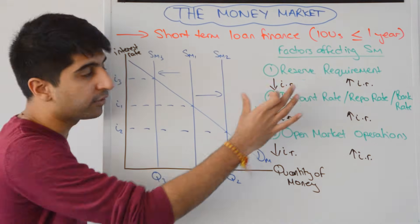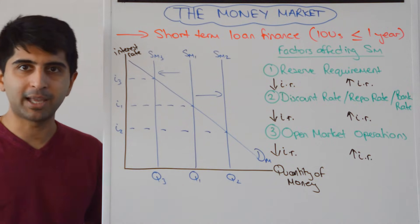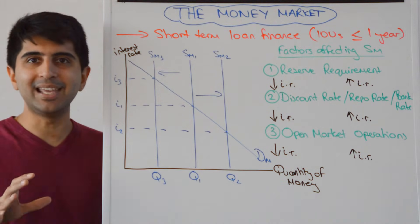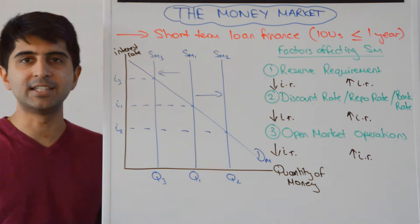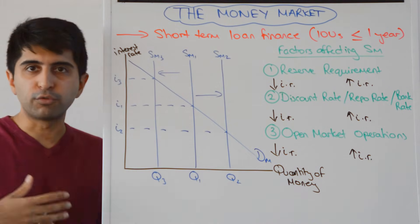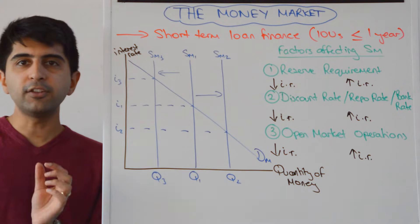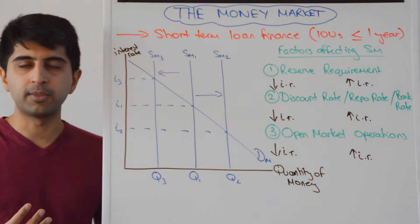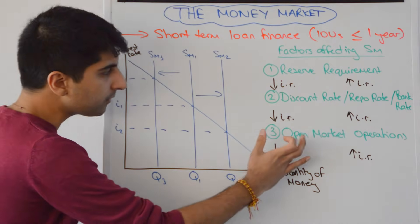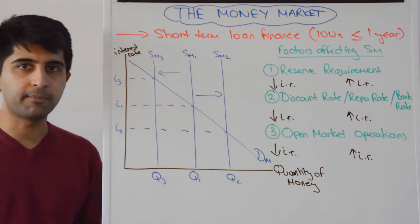So what tools are available to central banks to change the supply of money and therefore change interest rates? We're going to look at three: the reserve requirement, which is the amount of money that commercial banks need to keep in the Bank of England by law — that doesn't yet exist in the UK but is regulated in the US. The discount rate, or repo rate, or bank rate as it's called in the UK — the rate at which commercial banks borrow from the Bank of England to meet their short-term liquidity needs. And open market operations — the buying and selling of government bonds.